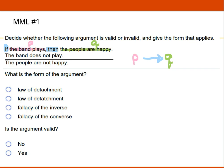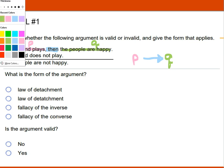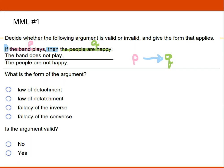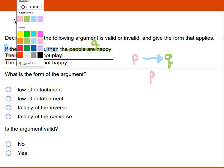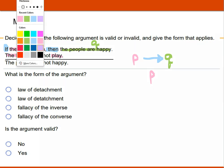The next premise says the band does not play. Now, the words the band plays is the letter P. However, we are putting a does not in there, and a does not means it's a negation.